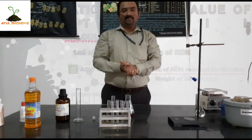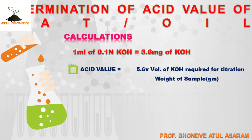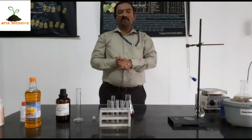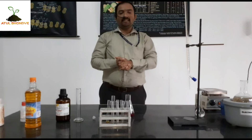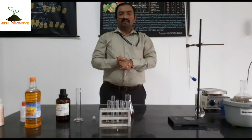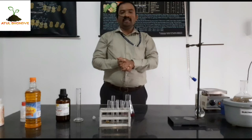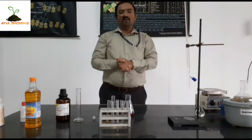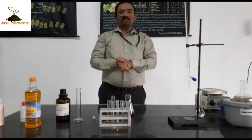For calculation: the formula for acid value is — Acid Value = 5.6 × (volume of KOH required for titration) ÷ (weight of sample). By substituting the values from today's practical into this formula, we will get the acid value of the fat or oil. For today's practical, we used C7 oil.